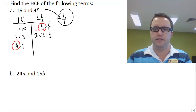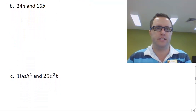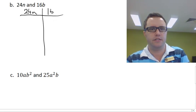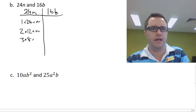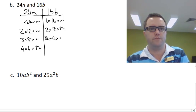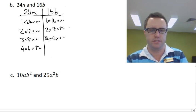This next one here, 24N and 16B. We're going to do the same thing we did before. So we have 1 times 24 times N, 2 times 12 times N, 3 times 8 times N, 4 times 6 times N. For 16B, we have 1 times 16 times B, 2 times 8 times B, 4 times 4 times B.